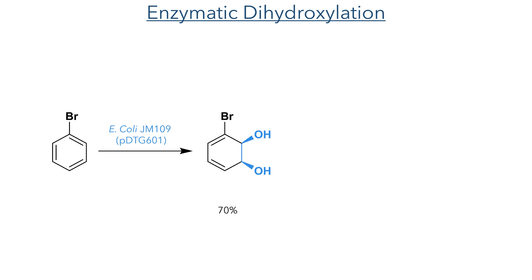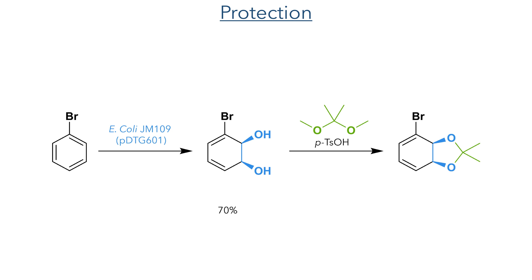The D-ring synthesis starts with an enzymatic dihydroxylation of bromobenzene using a strain of E. coli which overexpresses toluene dioxygenase and is capable of dihydroxylating a wide array of aromatic starting materials in a reaction that has no known chemical equivalent. This method was first developed by Gibson, and the Hudlicky group have pioneered its use in many total syntheses. This reaction produces the dihydroxylated compound in 70% yield on the gram scale with the hydroxyl groups bearing cis stereochemistry. These hydroxyl groups were then protected as an acetal before being taken forward into the cycloaddition step.